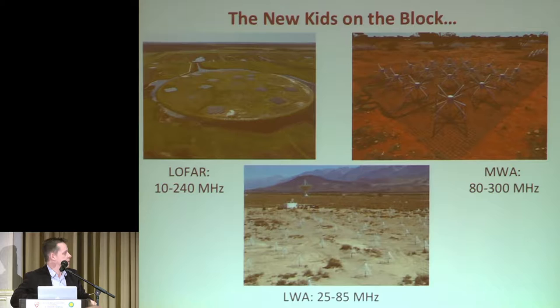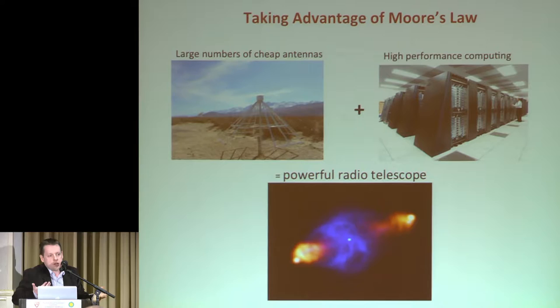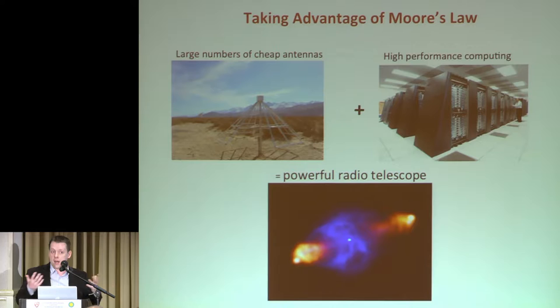All these arrays have something in common: instead of using a dish, they're using a dipole. The advantage is that you get a very large field of view, at a cost — if you want collecting area giving you any sensitivity, you have to have a lot of dipoles. But that's not a problem as long as you have the CPUs, GPUs, or whatever computational backend to support it. If you combine enough dipoles, you get a lot of sensitivity and a very large field of view.